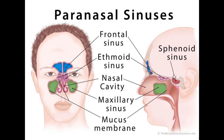The sphenoid sinus is in the sphenoid bone, which is at the base of the skull. It opens into the sphenoethmoidal recess. The arterial supply is the posterior ethmoidal artery as well as the internal carotid artery, which lies right beside it. You can see a pattern — if there's an artery, there's a similarly named nerve.